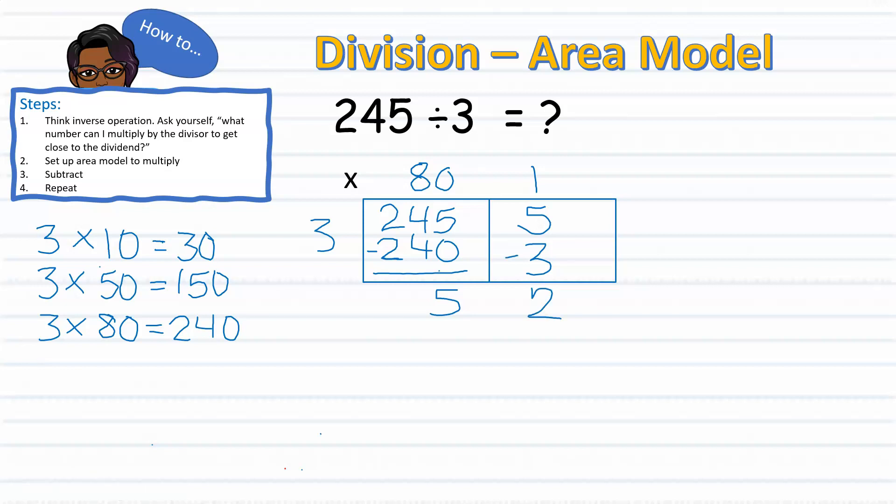And since 2 is less than my divisor, I know that I'm not able to divide any further. And so the 2 will serve as my remainder. Now to find the quotient, I must add 80 plus 1 equals 81 with the remainder of 2.